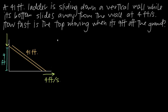The question is: how fast is the top of the ladder moving? So this point right here — the top of the ladder — how fast is that point moving when it is nine feet above the ground? What that tells us is that the distance from the top of the ladder to the ground is nine feet at the time that we're interested in.